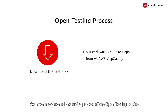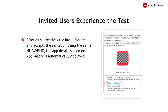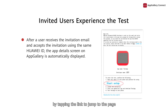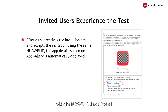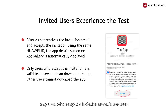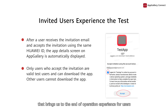And there you go, we've now covered the entire process of the open testing service. Now, let's move on to the last section, the Operation Experience for Users. After receiving an invitation email or SMS, a user can accept the invitation by tapping the link to jump to the page. If the user accepts the invitation, the user's device will automatically launch AppGallery and a details page of the app to be tested will be displayed. Note that the user must sign into AppGallery with the Huawei ID that is invited; otherwise, the user will be unable to find the app to be tested on AppGallery. Only users who accept the invitation are valid test users and able to download the app to be tested. Uninvited users will not receive invitation emails or SMS messages and cannot download the app to be tested.